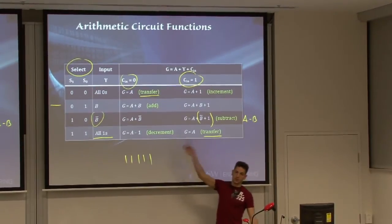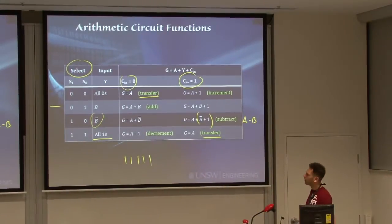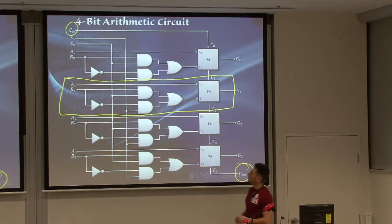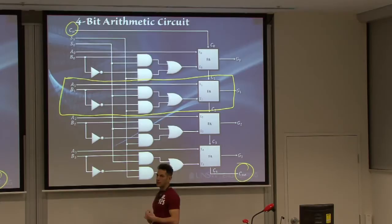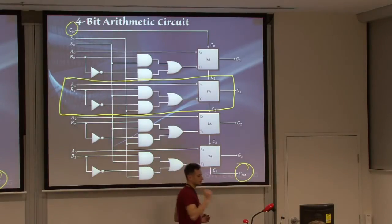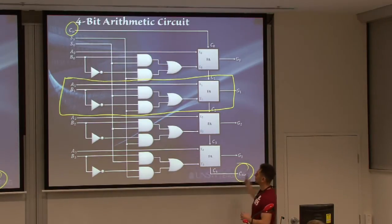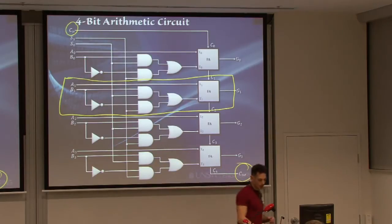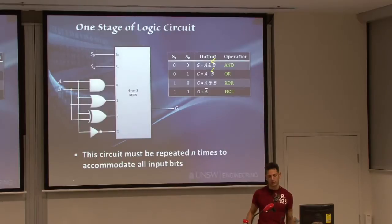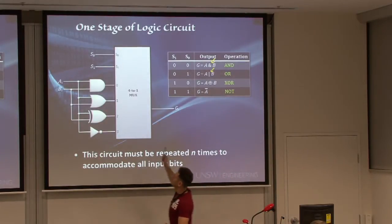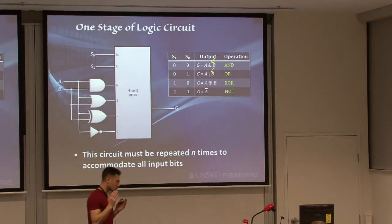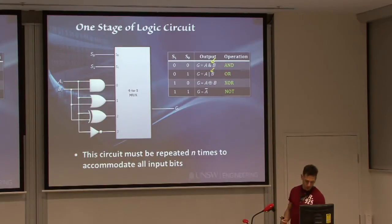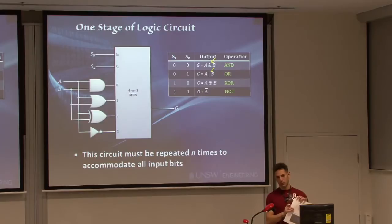For Cin equals 0 we get some operations, and for Cin equals 1 we get similar but somewhat different operations. We then showed how to build the arithmetic circuit and how to split it into stages, where every stage has a similar structure. It's enough to design one stage and then cascade them together to build the N-bit arithmetic circuit. Similarly, we built the logic circuit using a one-bit logic circuit and replicate it to get an N-bit circuit. This is where we stopped on Tuesday — now we're combining the whole thing together.